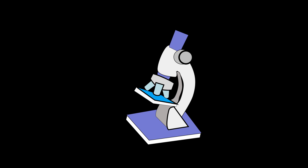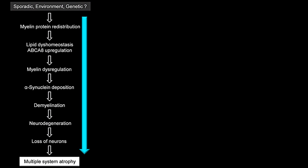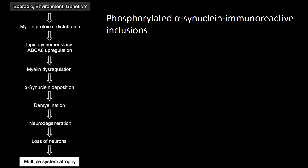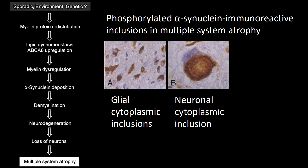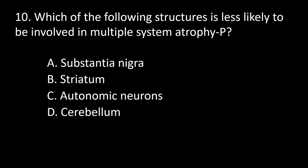The pathophysiology of multiple system atrophy involves sporadic environmental and genetic factors triggering atrophy across multiple neurological systems. One step is the deposition of synuclein, which produces inclusion bodies found in glial cell bodies, neuron cytoplasm, and neuronal nuclei. So the answer to this question is T.